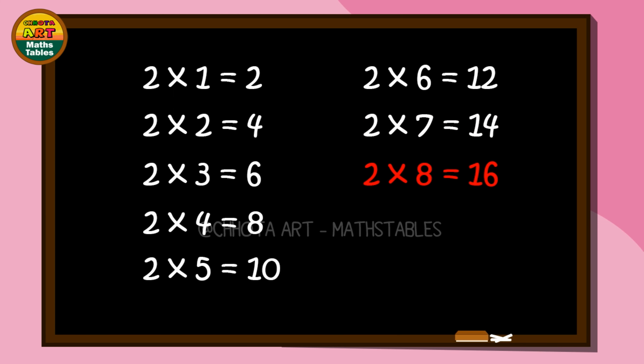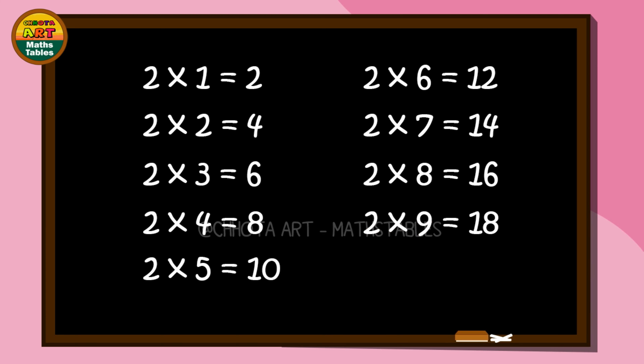Two eights are sixteen, two eights are sixteen. Two nines are eighteen, two nines are eighteen. Two tens are twenty, two tens are twenty.